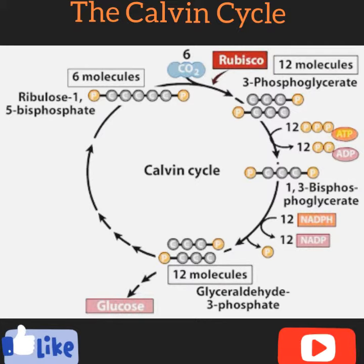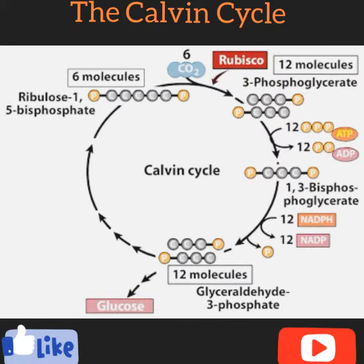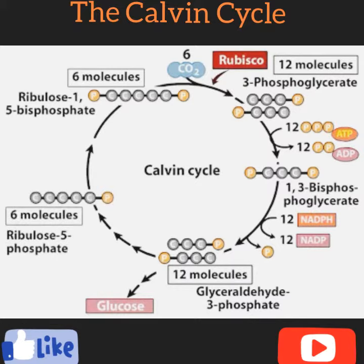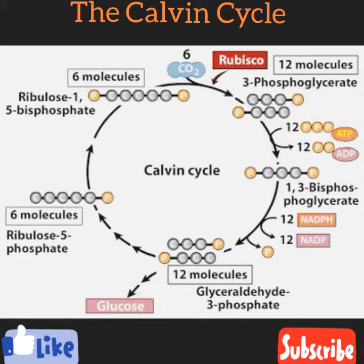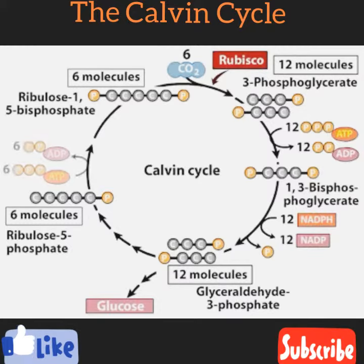Glyceraldehyde-3-phosphate is used to form the six-carbon sugar glucose and other products of photosynthesis. However, it's also used in a complex series of reactions that produce a new supply of the CO2 acceptor, RuBP. The regeneration of each RuBP molecule requires a molecule of ATP. The cycle is now ready to proceed again.